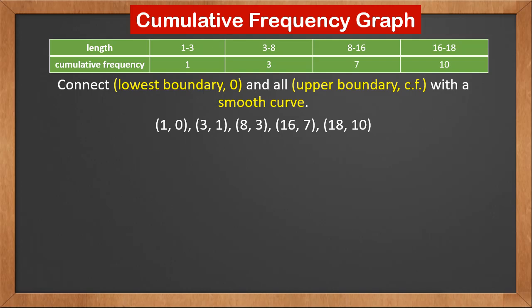We can construct the remaining 2 points the same way. Now we have 5 points for 4 classes. There is always 1 more point than the number of classes. Another way to construct these points is to put all boundaries in the x coordinate. The boundaries are 1, 3, 8, 16, 18.